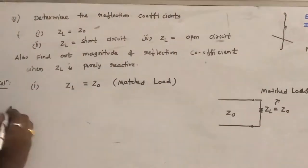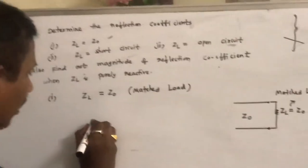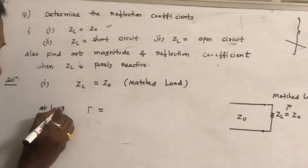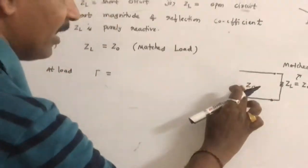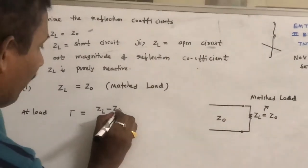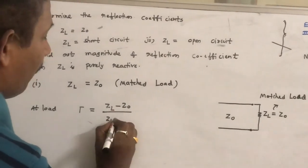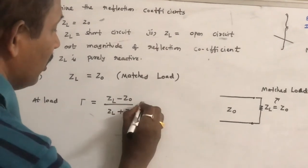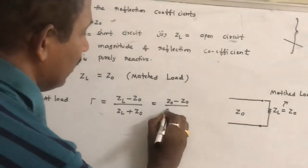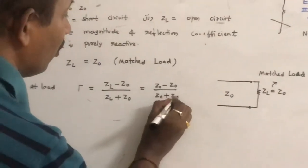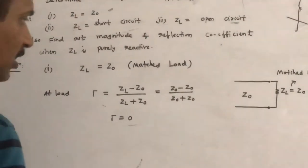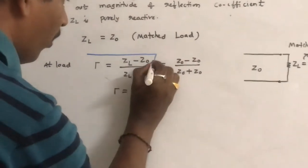So what formula do you have to use? The reflection coefficient at load is given by the simple formula: Γ = (ZL - Z0) / (ZL + Z0). Since the load equals Z0, we get (Z0 - Z0) / (Z0 + Z0), so therefore the reflection coefficient comes out as zero.